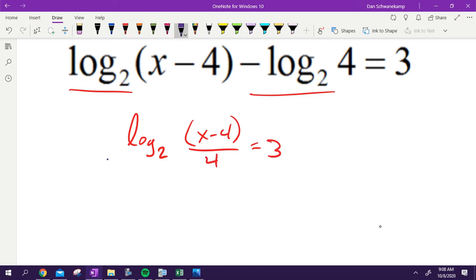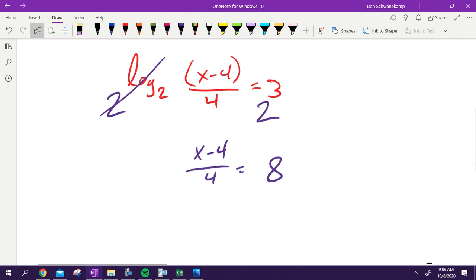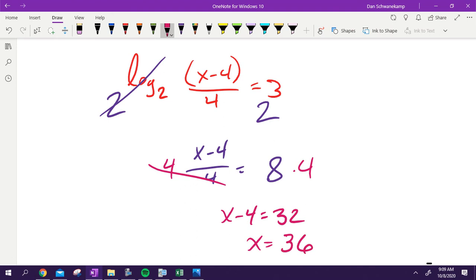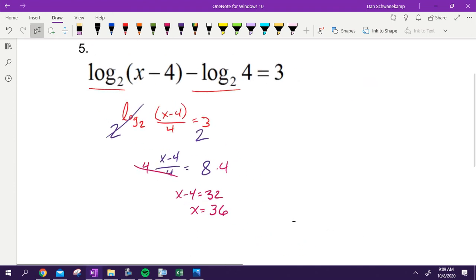Condense it. Log base 2, x minus 4 divided by 4, is equal to 3. Then, don't forget, how do I get rid of log base 2? 2 to a power, 2 to a power, 2 to a power. That's going to cancel. I get x minus 4 over 4 is equal to 8. 2 cubed is 8. Last period I got a lot of 9s there, just take your time, don't do silly stuff. Then I'm going to get rid of my 4, multiply by 4, multiply by 4. X minus 4 is 32. Add 4, x is 36. Condensing and then solving, that was the theme of that one.